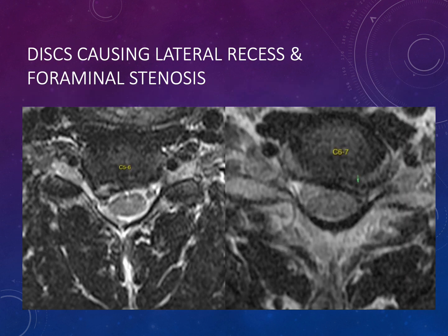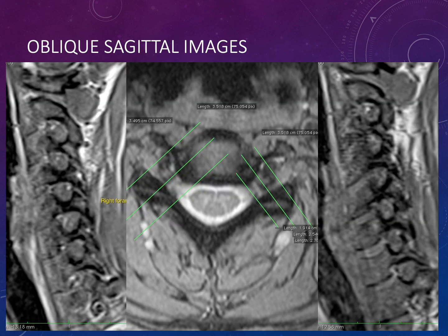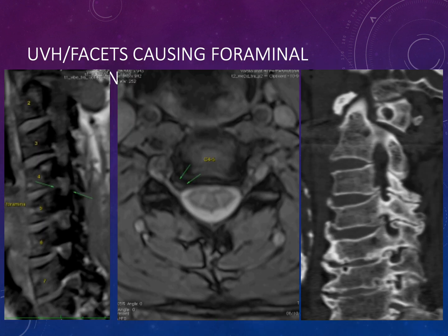Foraminal narrowing can also result from lateral recess disc herniations, foraminal disc herniations, and end plate spondylosis. An effective way to assess the foramen is to acquire oblique sagittal images — reconstructed on CT or acquired on MRI. This is analogous to the oblique cervical spine radiograph and allows you to see uncovertebral spurring and the facets very nicely, on both MRI and CT oblique reformatted images.